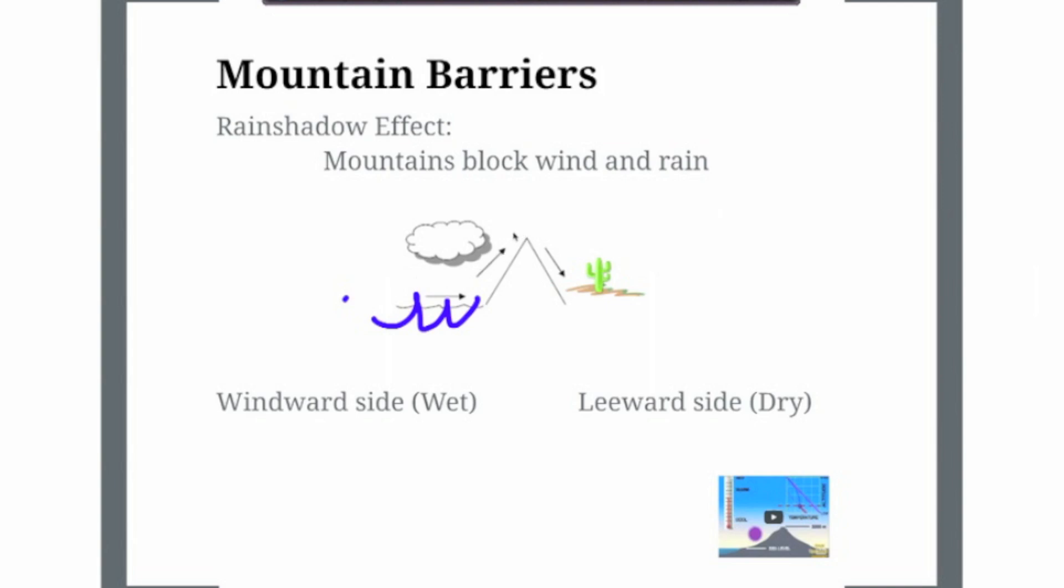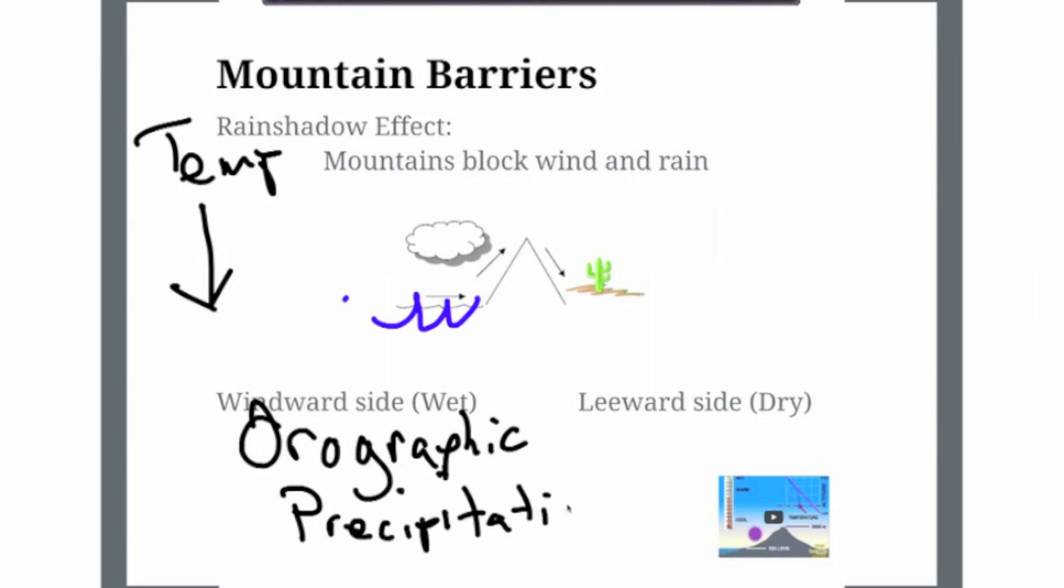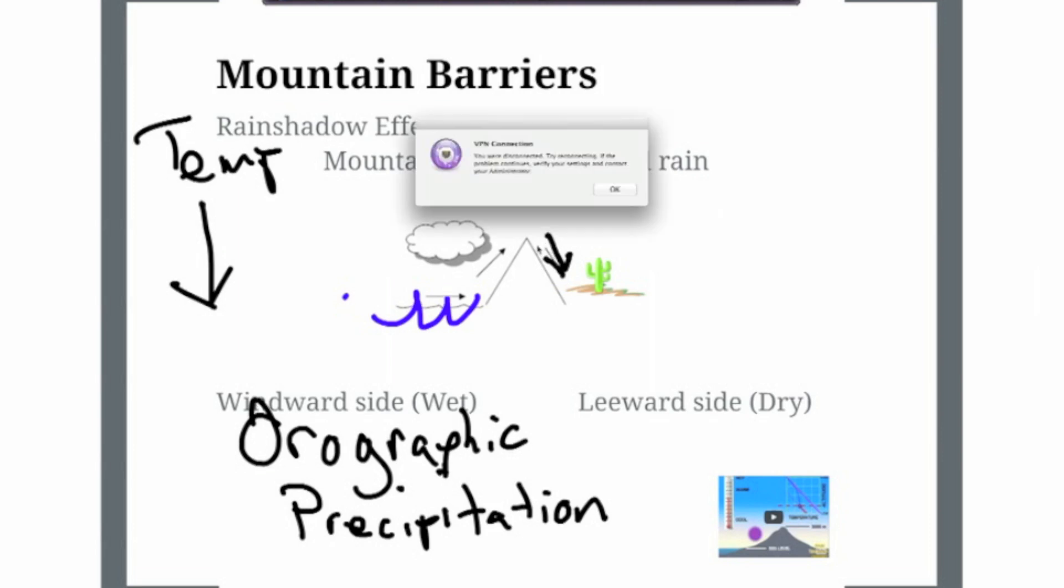As the moisture goes over the mountain, it's going to be forced up this mountain. What's going to happen to the temperature? The temperature is going to drop. And as the temperature drops and the pressure decreases, you're going to have rainfall. And we call that rainfall orographic precipitation. As the moisture goes over the mountain, the mountaintop, it's going to be forced back down. And as it's forced back down, the temperature is going to increase along with the pressure.